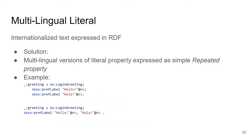Since we are on the web, which is inherently multilingual, the multilingual literal pattern emphasizes that literals containing natural text should have language tags. When focusing on a multilingual environment, you should have labels for your things in multiple languages. You can use skos:prefLabel for that — the rule is that you can have one preferred label per natural language.